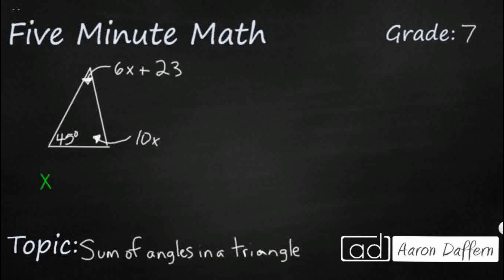So x is going to equal a mystery number, and the clues we have are we actually have one angle measure right here, 45 degrees. But then we've got this one angle right here that's 10x, and then we've got another angle here that's 6x plus 23. That's it. That's the only clues we have.